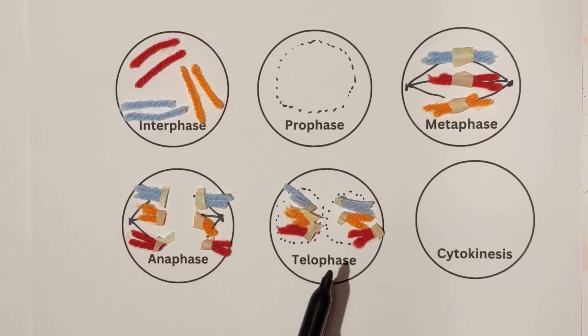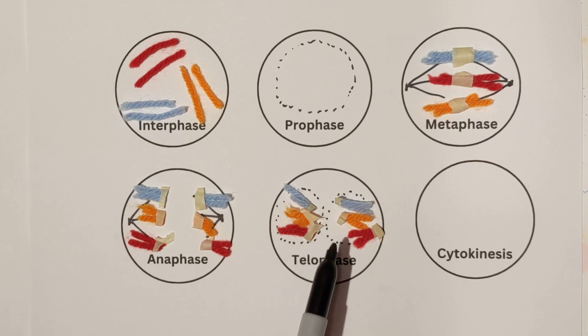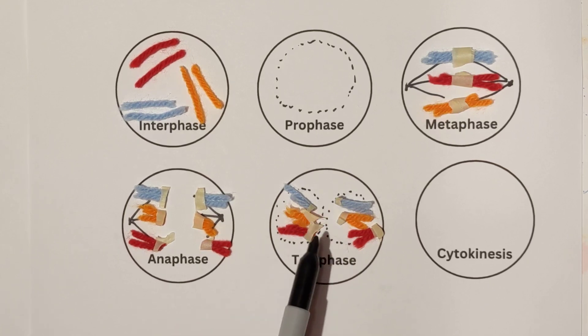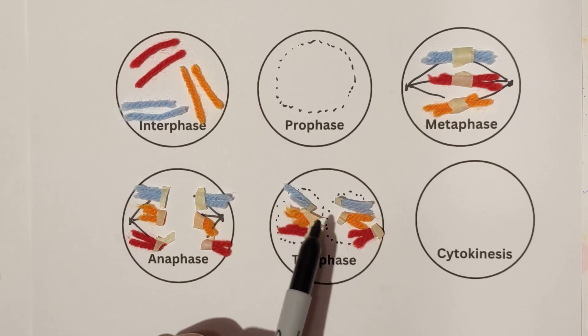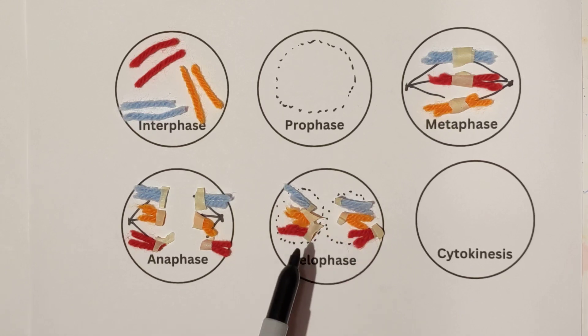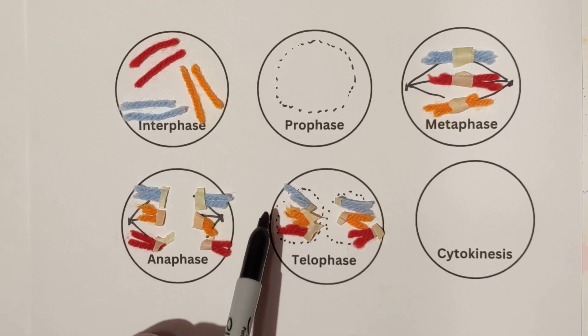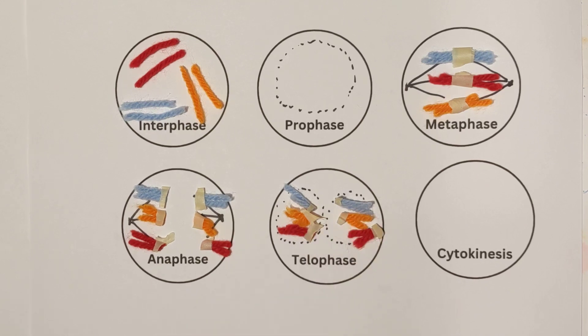Now, during telophase, you have the chromosomes have been pulled apart, moved in different directions. Now, these are exact copies of one another. And then a nuclear envelope is beginning to form again around these two different sets. Because remember, the goal of this whole thing is to create two cells that are exactly the same.